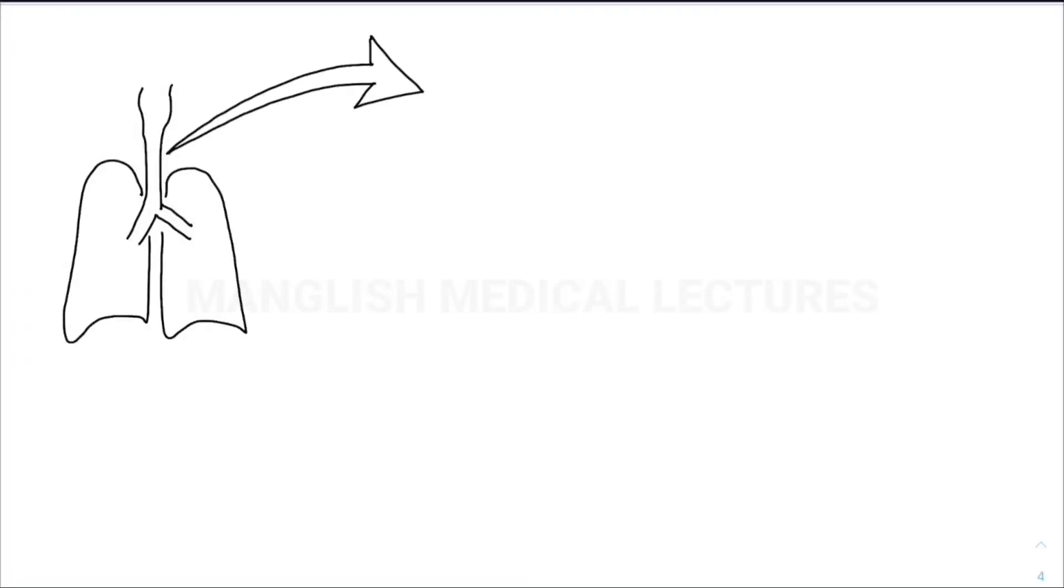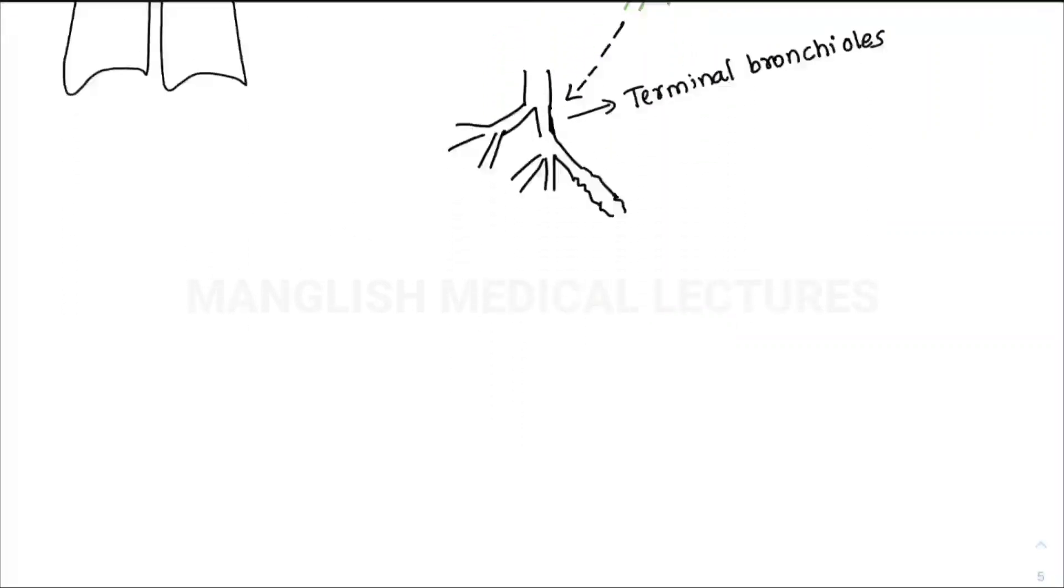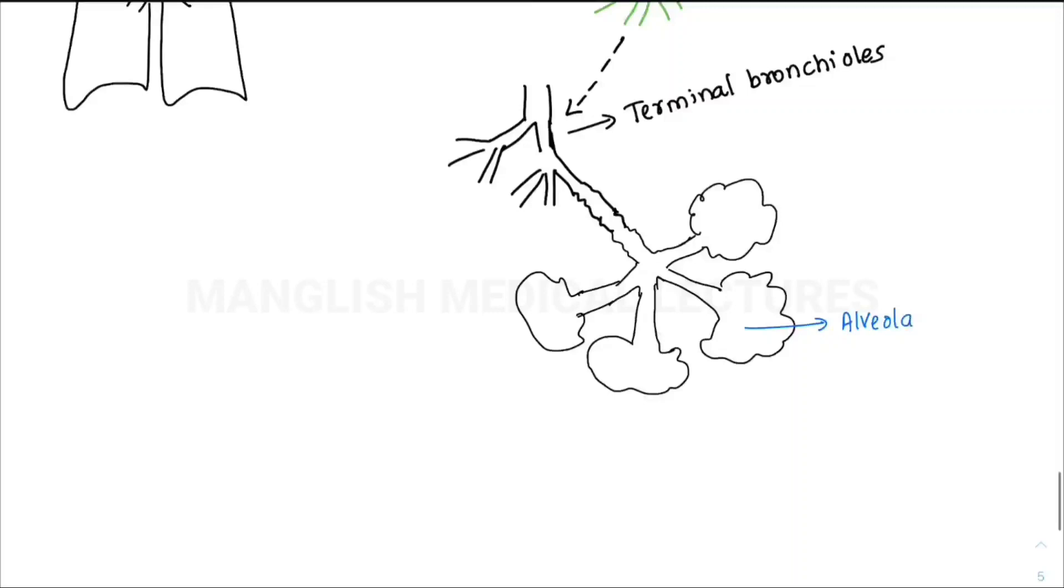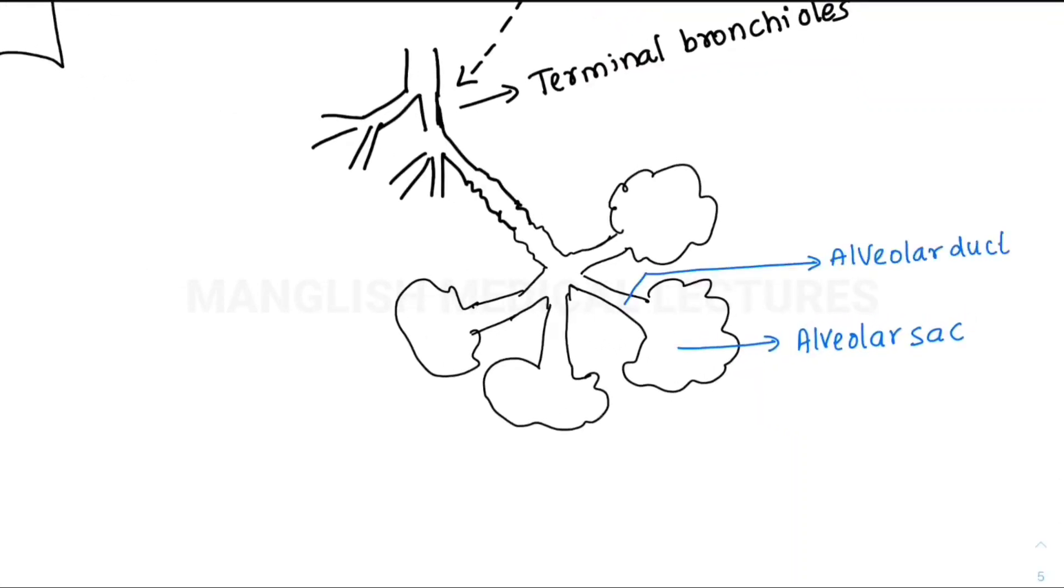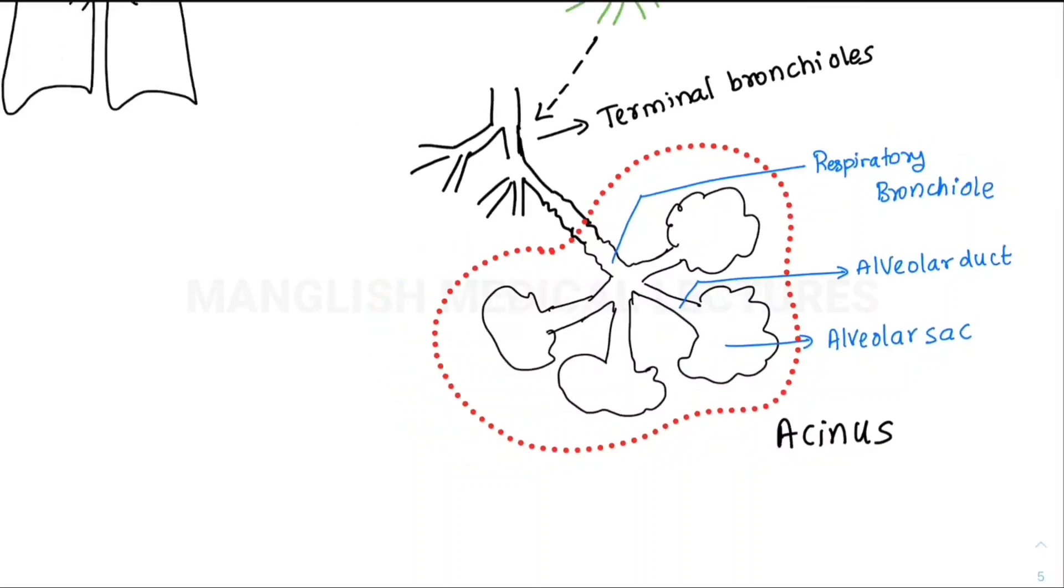Before going into pneumonia, we'll discuss the normal anatomy. You can see the trachea giving off the right and left bronchus. It undergoes progressive division, forming terminal bronchioles, which then divide into respiratory bronchioles, giving off an alveolar duct and alveolar sac. These three combined—alveolar sac, alveolar duct, and respiratory bronchiole—are known as an acinus.